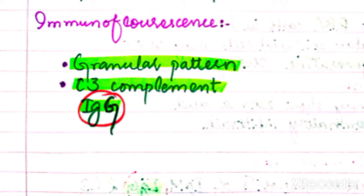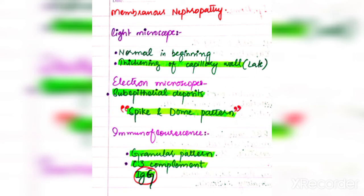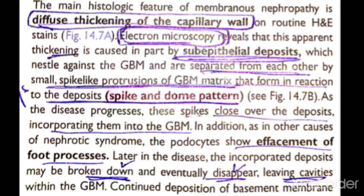In membranous nephropathy, immunofluorescence shows C3 complement and IgG — not IgM. You can see the differentiating table in your book (Table 14.2). In minimal change disease, there is no immunofluorescence because there are no immune complexes. In focal segmental glomerulosclerosis, you see C3 complement and IgM. In membranous nephropathy, you see granular immunofluorescence with C3 and IgG, because of immune complex formation.